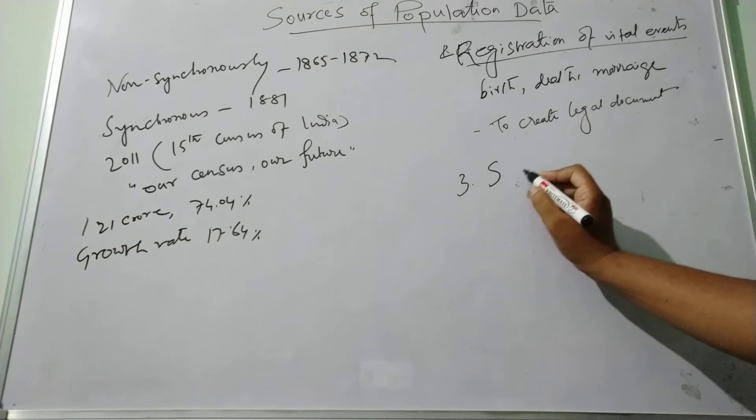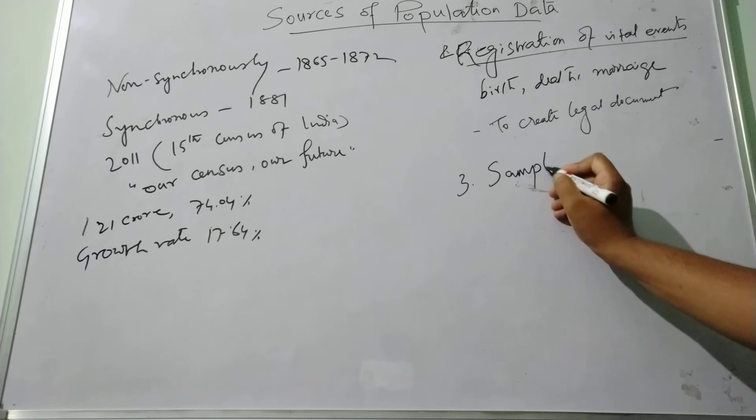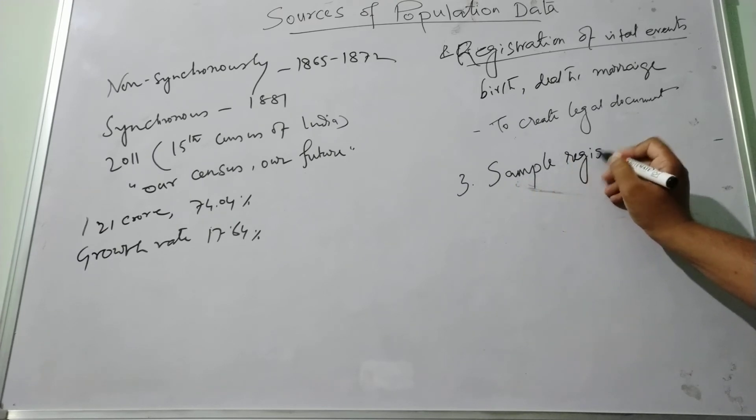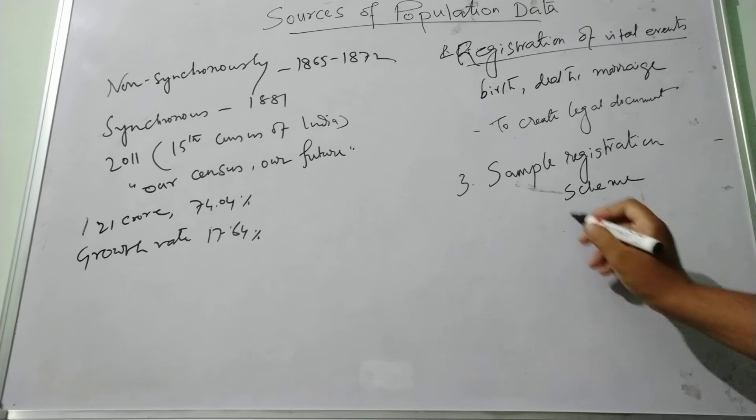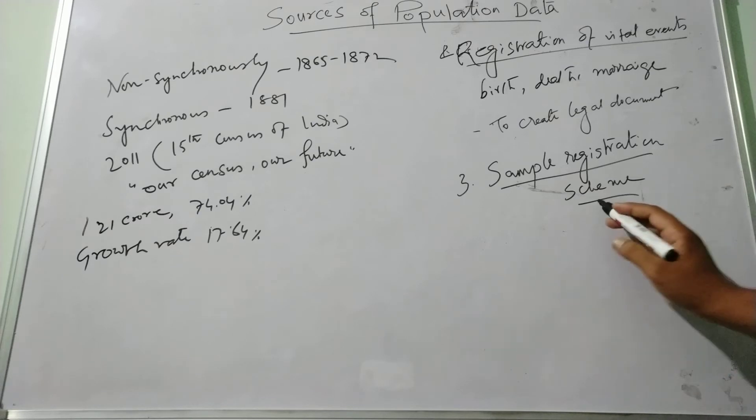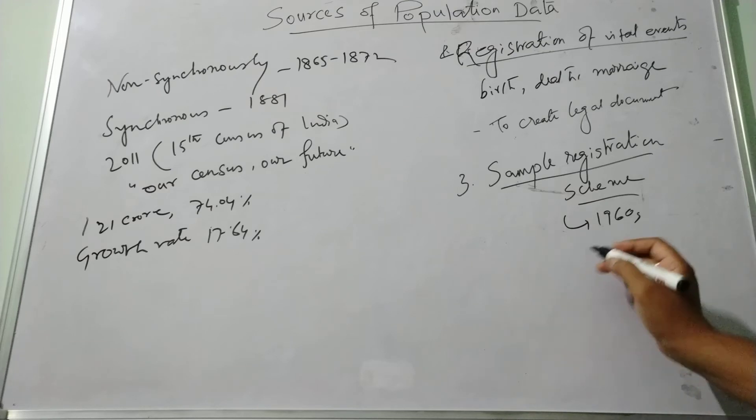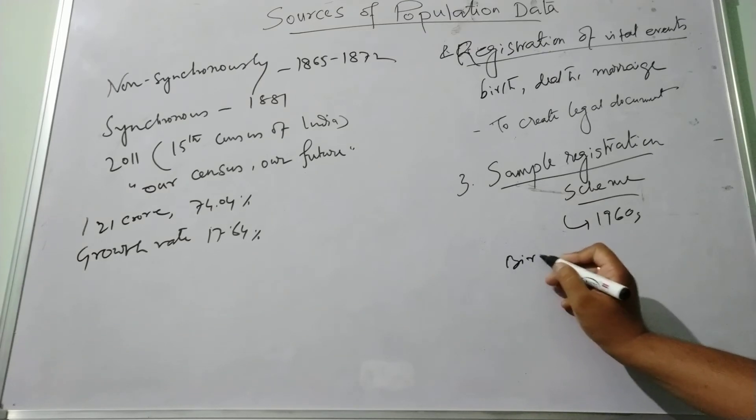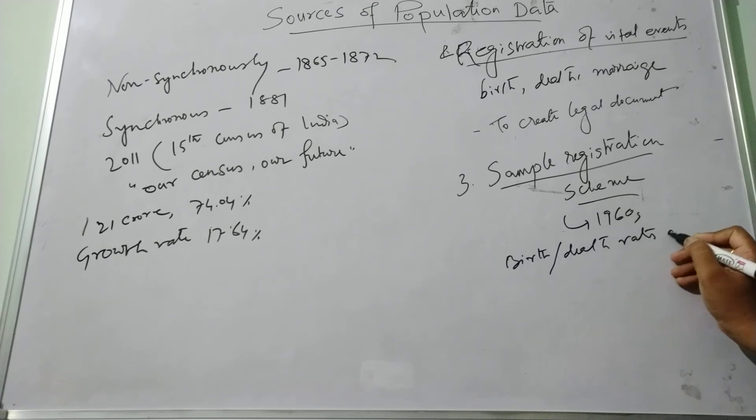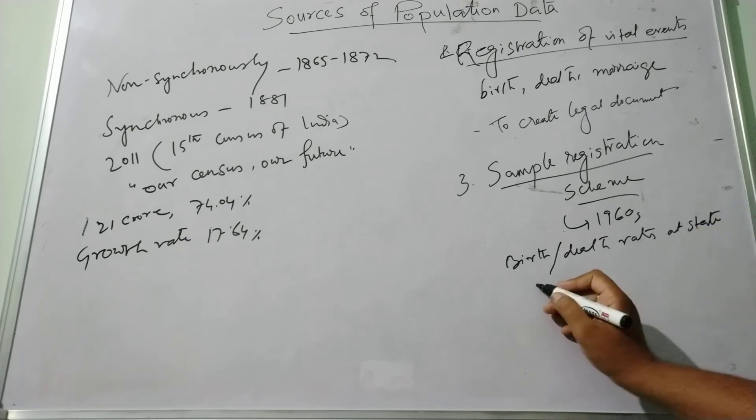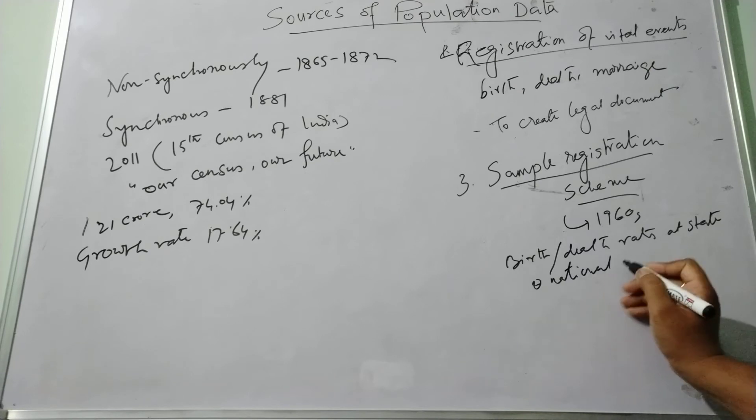Third is sample registration. The sample registration has been initiated in India in the 1960s to provide a reliable estimate of birth and death rates at state and national level.